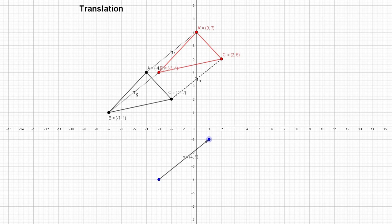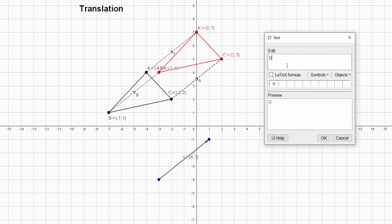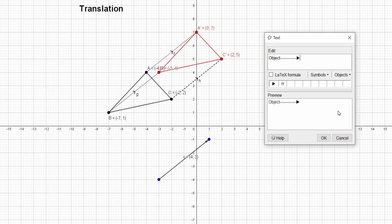Now I'm going to demonstrate the object point and image point in terms of the coordinates. For that I need to go to this text button. Let me type over here: Object. The first object is this point A.